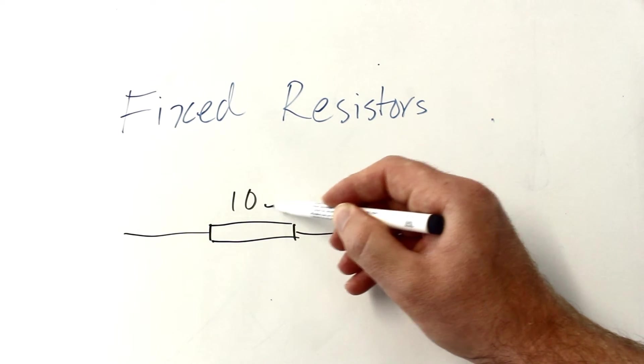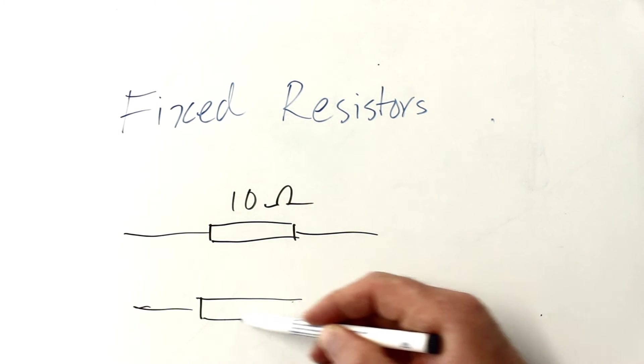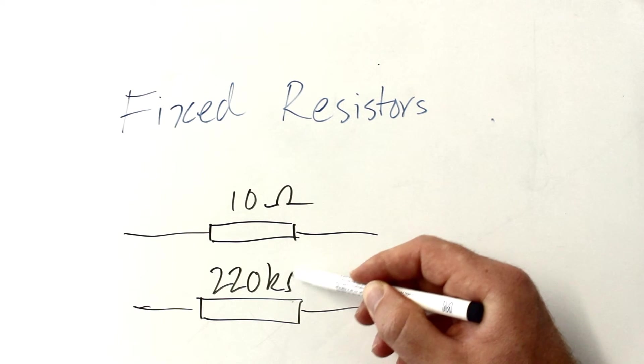And again, if it's a 10-ohm resistor, we can just write it on. If it's that resistor we just saw, just write the value above it.